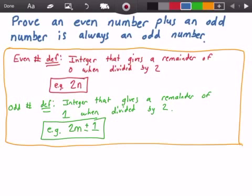In the yellow rectangle here, I have the definition for what it means for a number to be even, and the definition of what it means for a number to be odd. The definition of an even number is an integer value that gives a remainder of zero when divided by two.